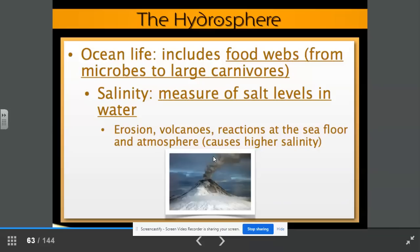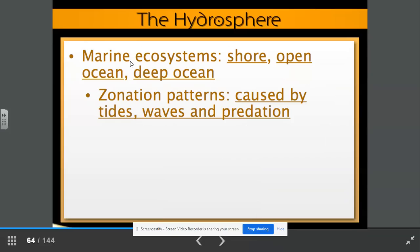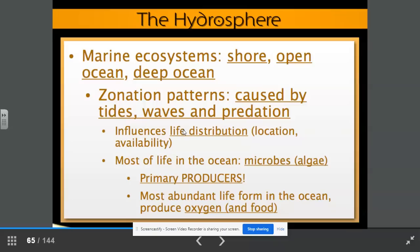Marine ecosystems. When you see the word marine, I want you to think of salt water ocean ecosystems. Marine ecosystems. We have the shore, the open ocean and the deep ocean. We have different zonation patterns caused by the tides waves and predation. This influences life distribution, the location and availability of life. Most of life in the ocean includes microbes in the form of algae. They are our primary producers in the ocean. They are the most abundant life form found in the ocean and they produce oxygen and food.